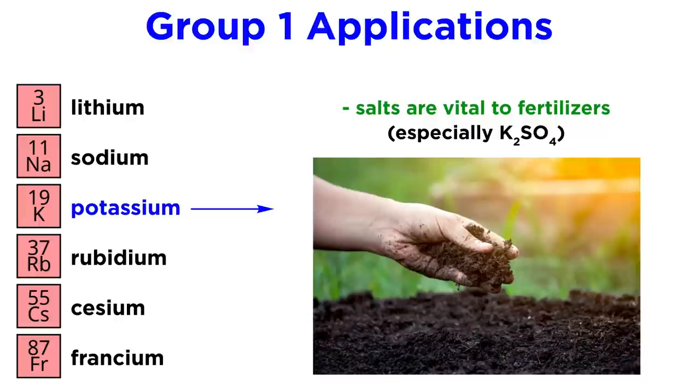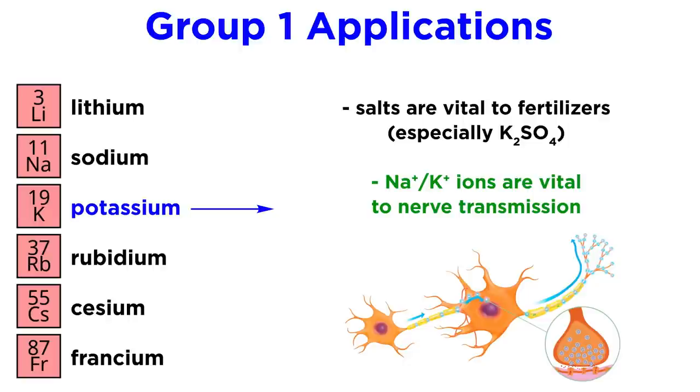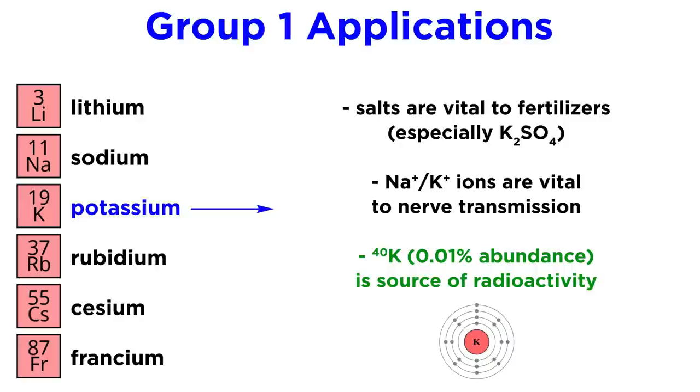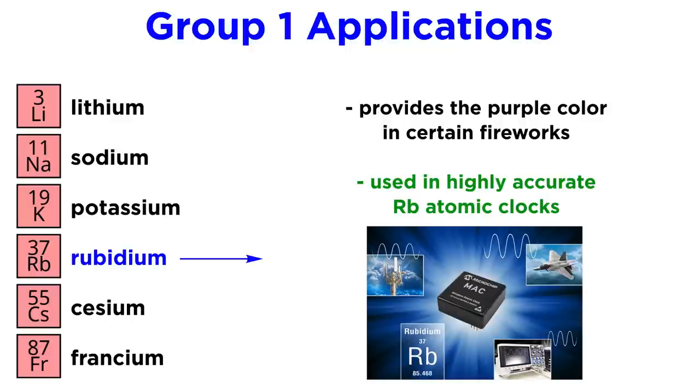Potassium salts are vital to fertilizers. Both sodium and potassium ions are vital to nerve transmission, as we learned about in the biopsychology series, so potassium deficiency results in progressive paralysis. Also potassium is a source of radioactivity, as 0.01% of potassium is in the form of the radioactive 40K nuclide.